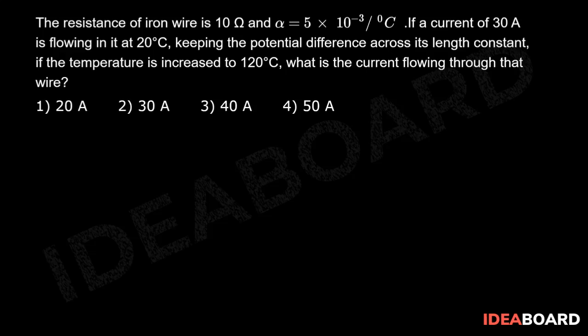Generally, we know the expression for temperature coefficient of resistance, that is RT = R0 × (1 + α × ΔT). Let us apply for different temperatures: R1 = R0 × (1 + α × ΔT1), this is equation 1. R2 = R0 × (1 + α × ΔT2), this is equation 2.